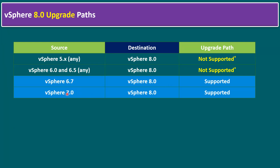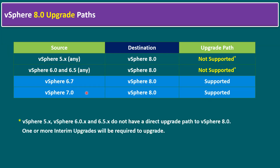Similarly, from 7.0 to 8.0 or any latest version of 8.0 Update 2, that upgrade path is also supported. For the first two scenarios — 5.x, 6.0, or 6.5 — there is no direct upgrade path to 8.0; one or more interim upgrades will be required. For example, if you have 6.0, you must minimally upgrade to 6.7 first.